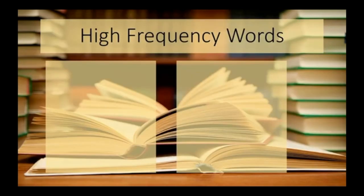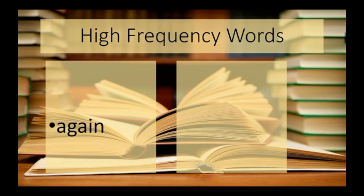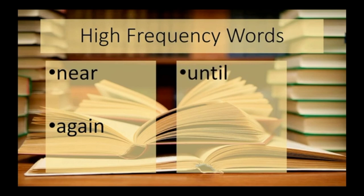Our high frequency words this week — I'm going to read and spell them, and I'd like you to do the same along with me and come up with a sentence to go with each. The first one is again: A-G-A-I-N, again. The next word is near: N-E-A-R, near. The third word is until: U-N-T-I-L, until.